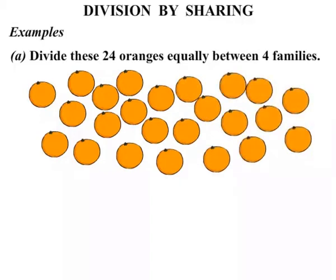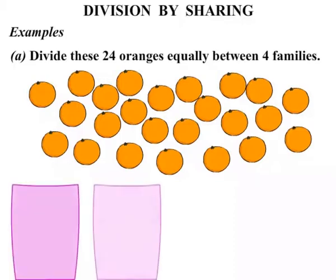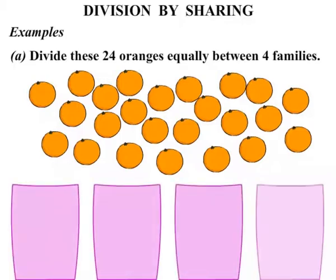Now between 4 families we are splitting them up. 1, 2, 3, 4 — 4 containers there. And let's see how many oranges go in each one.